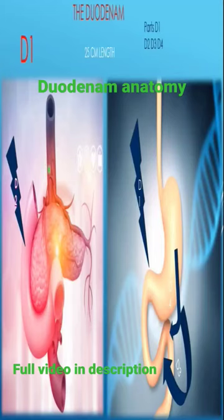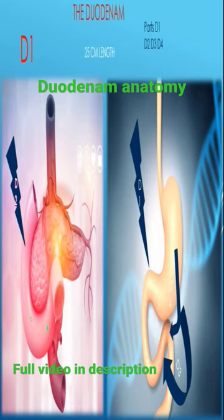The small intestine's first part is the duodenum. The duodenum is a C-shaped structure starting from the pylorus. It has four parts: D1, D2, D3, and D4. It first ascends, then descends — D1 is the initial part, followed by D2, D3, and D4. D4 leads to the duodenojejunal flexure.